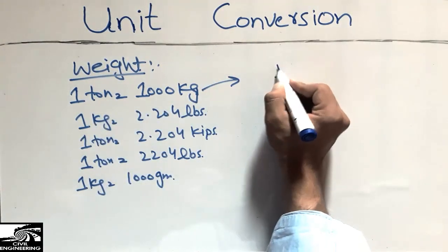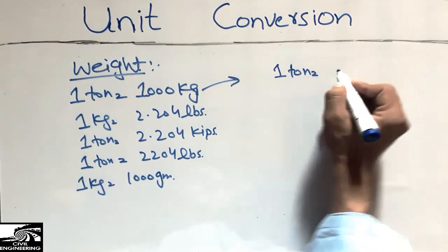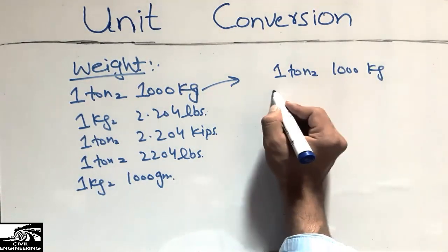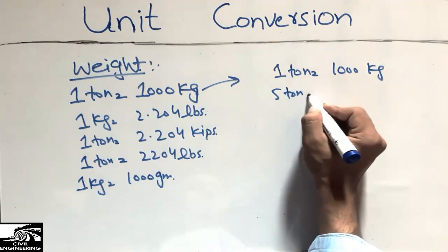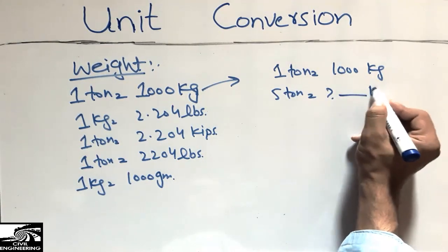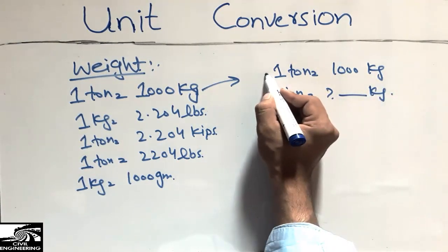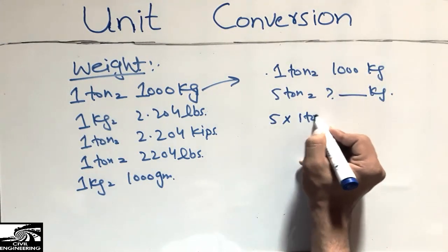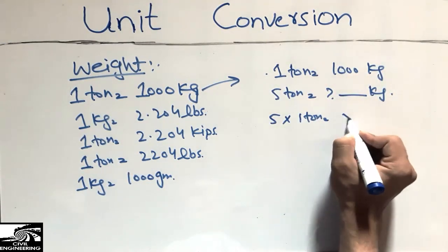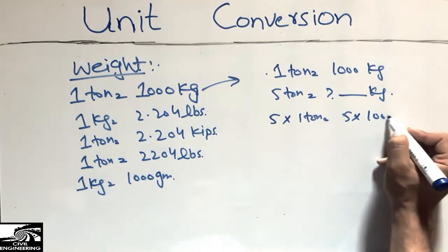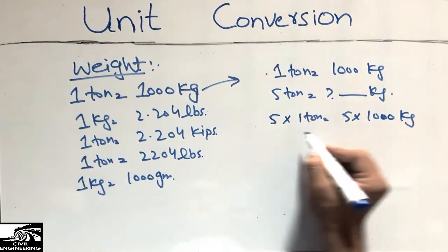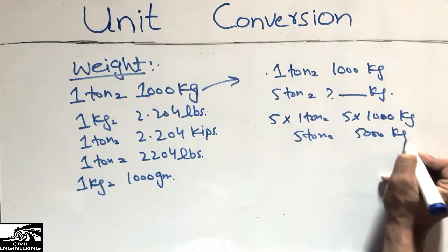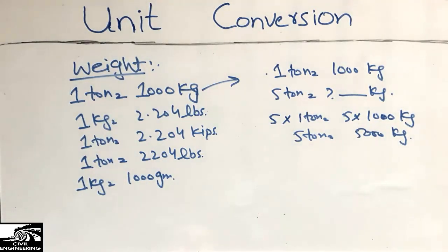Let's take an example. One ton equals 1000 kilograms. How much is five tons in kilograms? We multiply both sides by five: five multiplied by one ton equals five multiplied by 1000, so five tons equals 5000 kilograms.